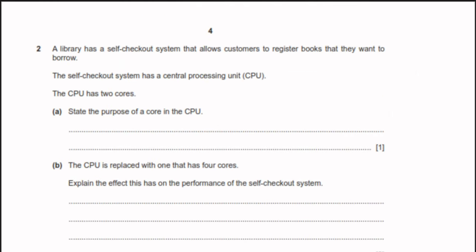Question number 2: a library has a self-checkout system that allows customers to register books they want to borrow. The self-checkout system has a CPU with two cores. The purpose of a core in a CPU is to execute instructions.